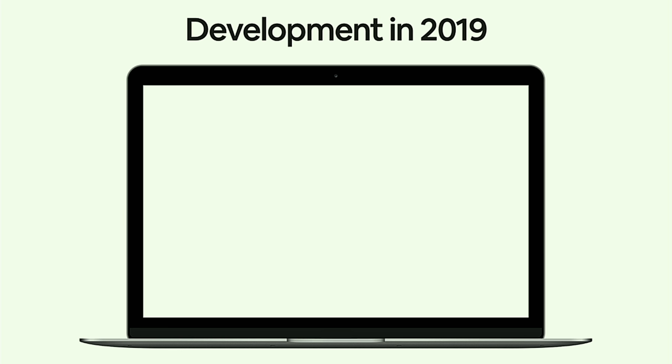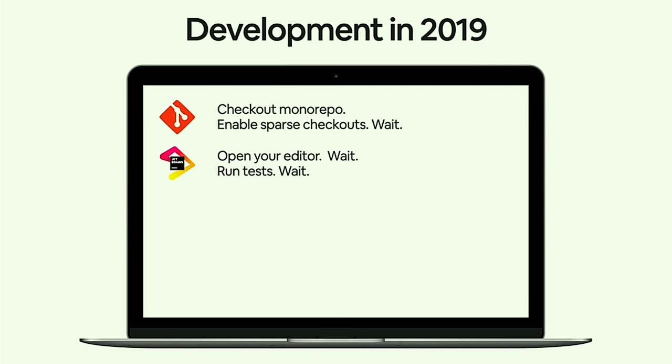The vision of developer productivity at Airbnb is that we want to equip all Airbnb developers to engineer the best software of their careers. Taking you back to circa 2019, this is the average experience of a backend developer at Airbnb: you check out the monorepo, enable sparse checkouts, wait quite a bit, then open your editor and wait even longer — probably on your third coffee. Then you start running some tests.